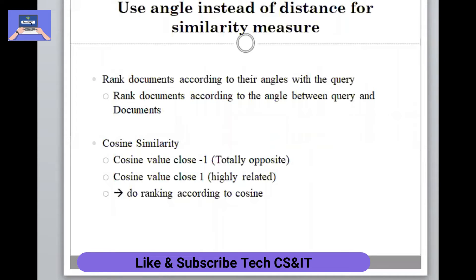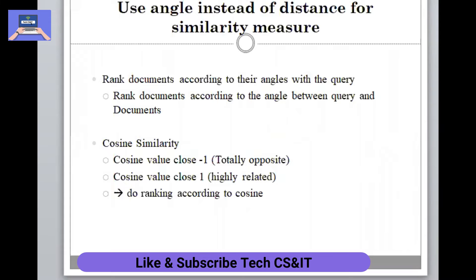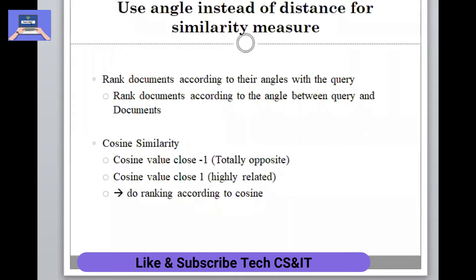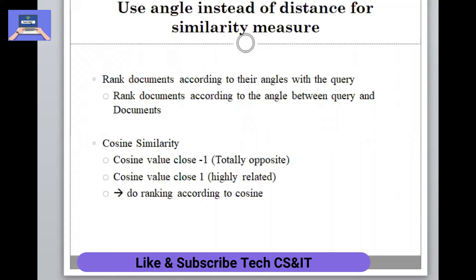There are two methods to find similarity in the vector space model: one is using the TF-IDF measure, and the other is cosine similarity, which we will be discussing today because it is a more appropriate approach and finds better similarity between documents. What we do is find the angles and use those angles as the similarity measure, and the angle determines the ranking of different documents.